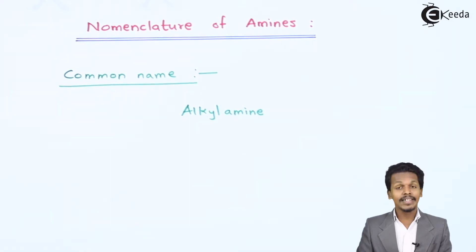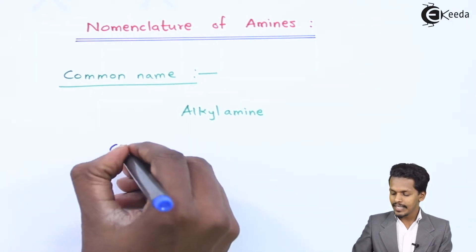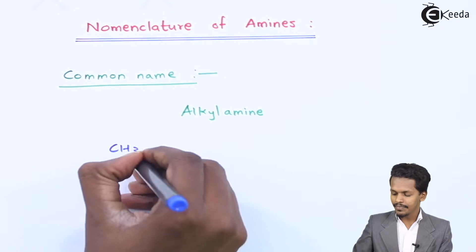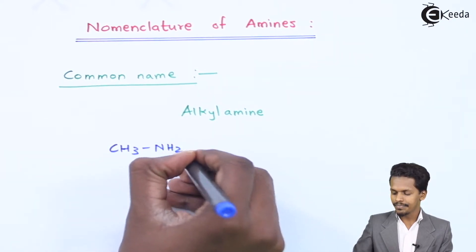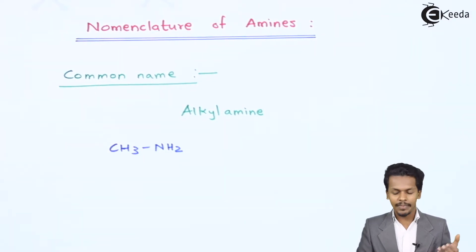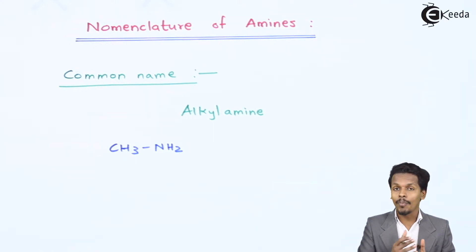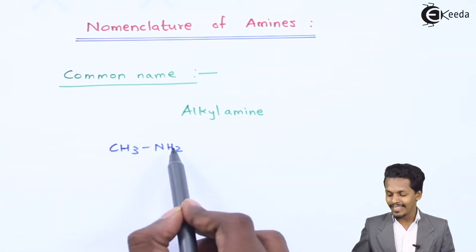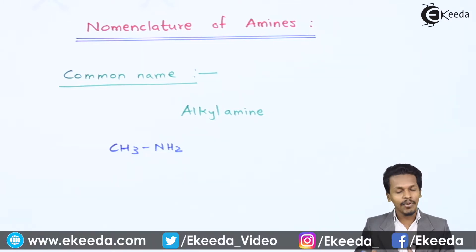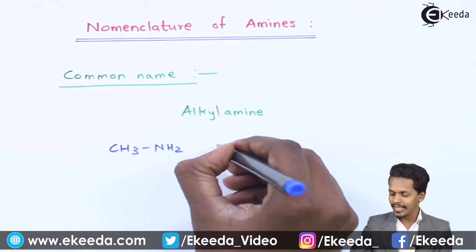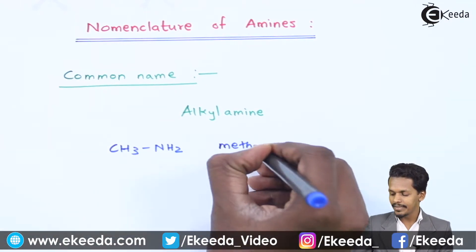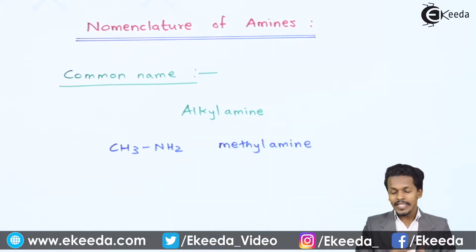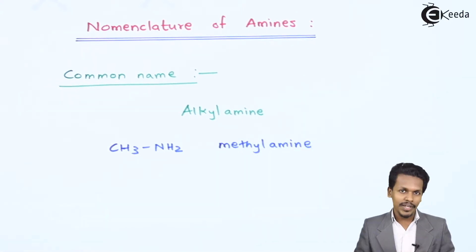For example, if I consider CH3NH2, this is a primary amine. Suppose we have to give a common name to this one. So obviously CH3 is an alkyl group and NH2 is an amine, so the name of this one could be given as methylamine.